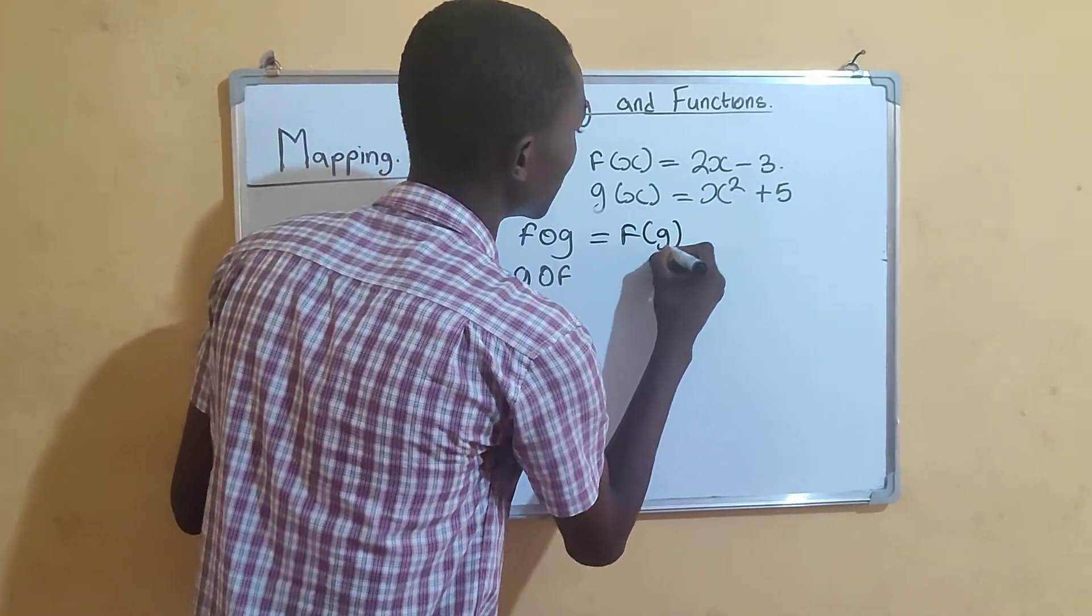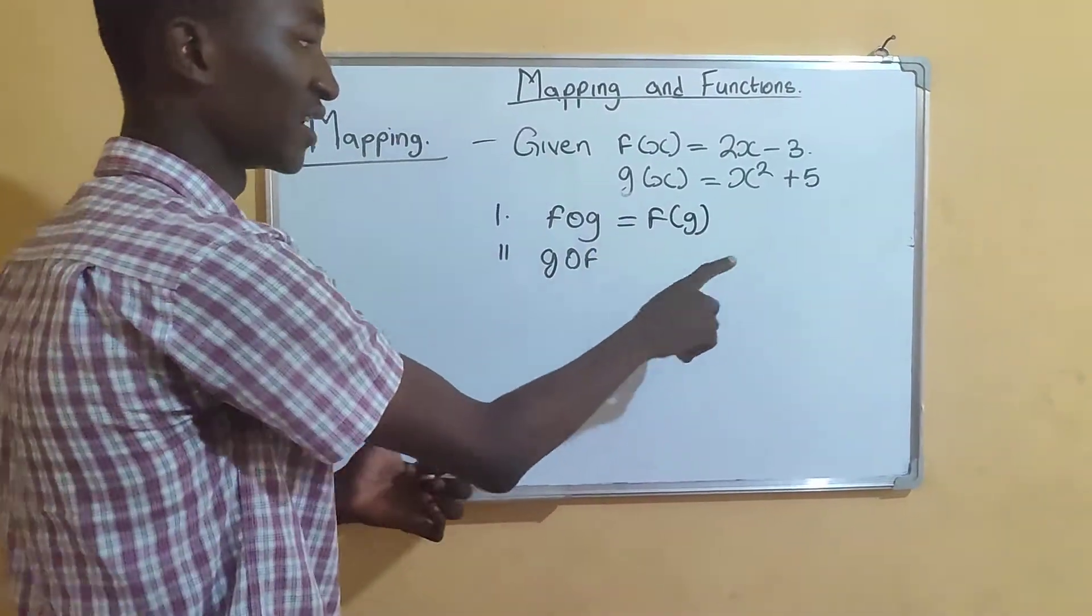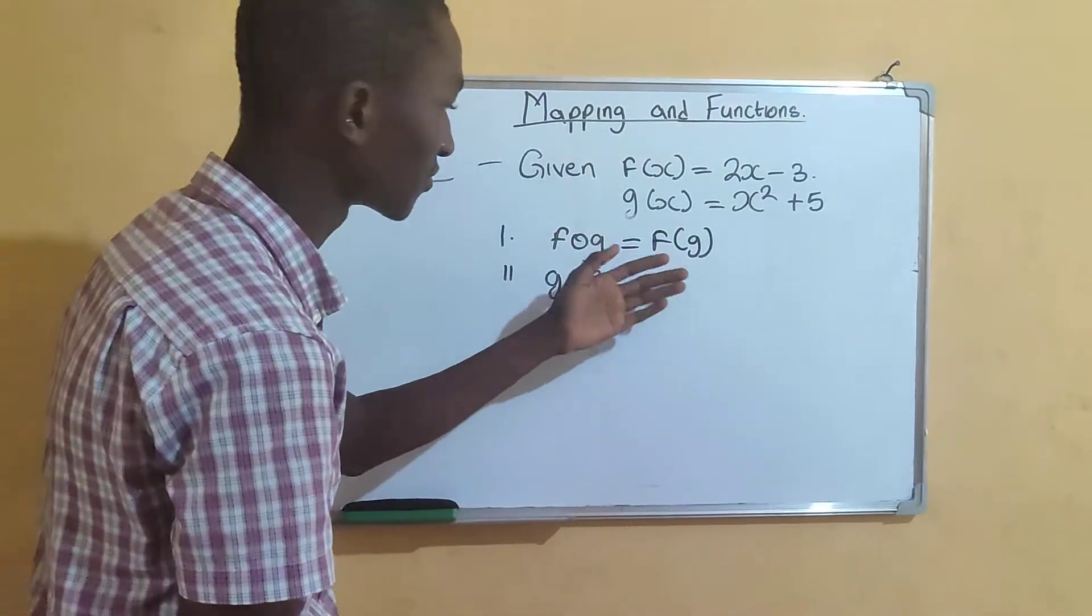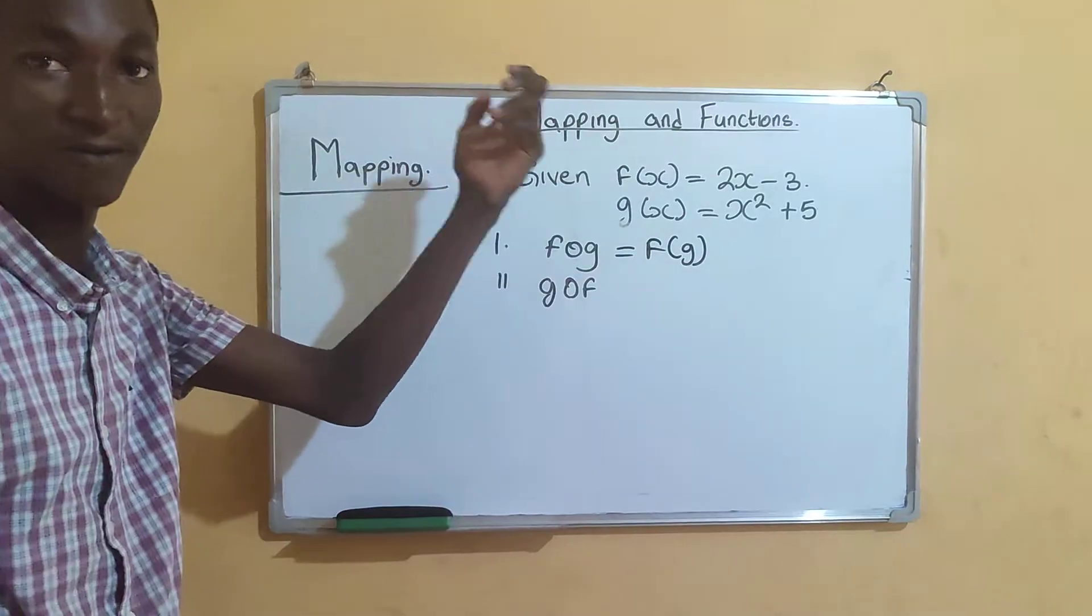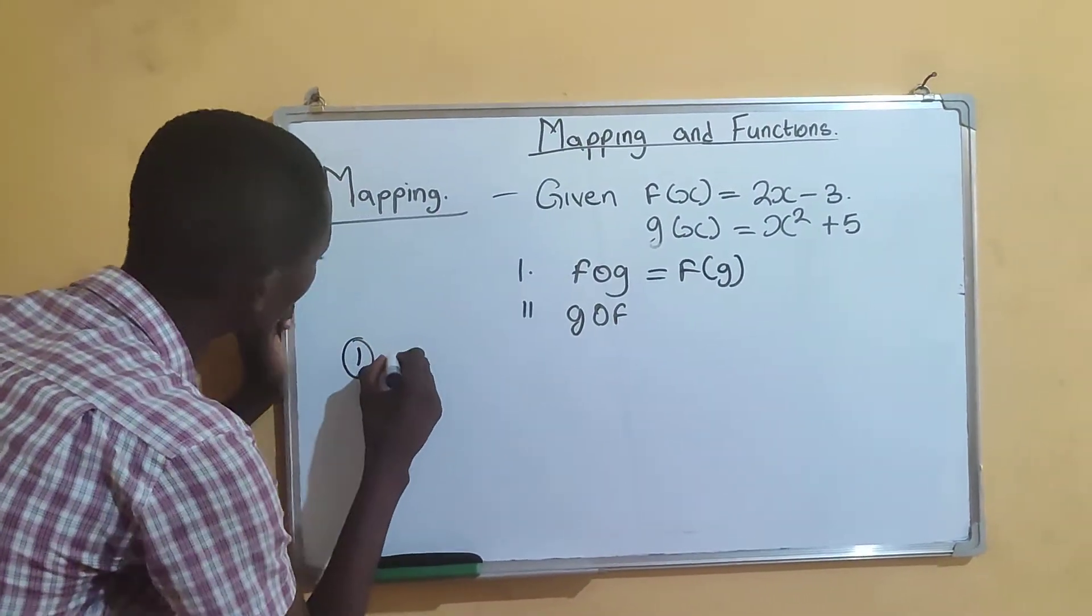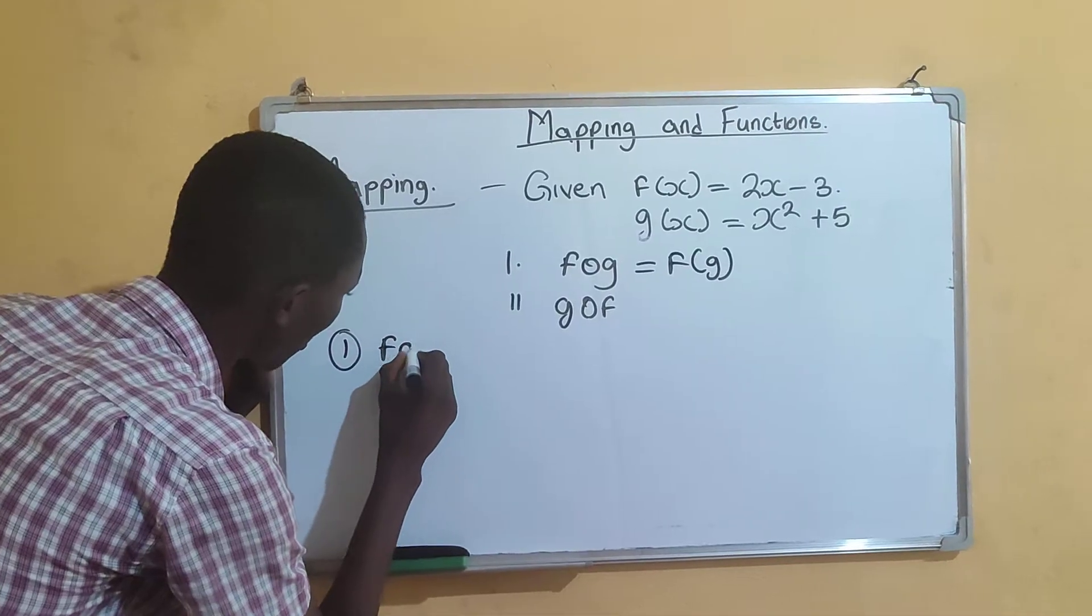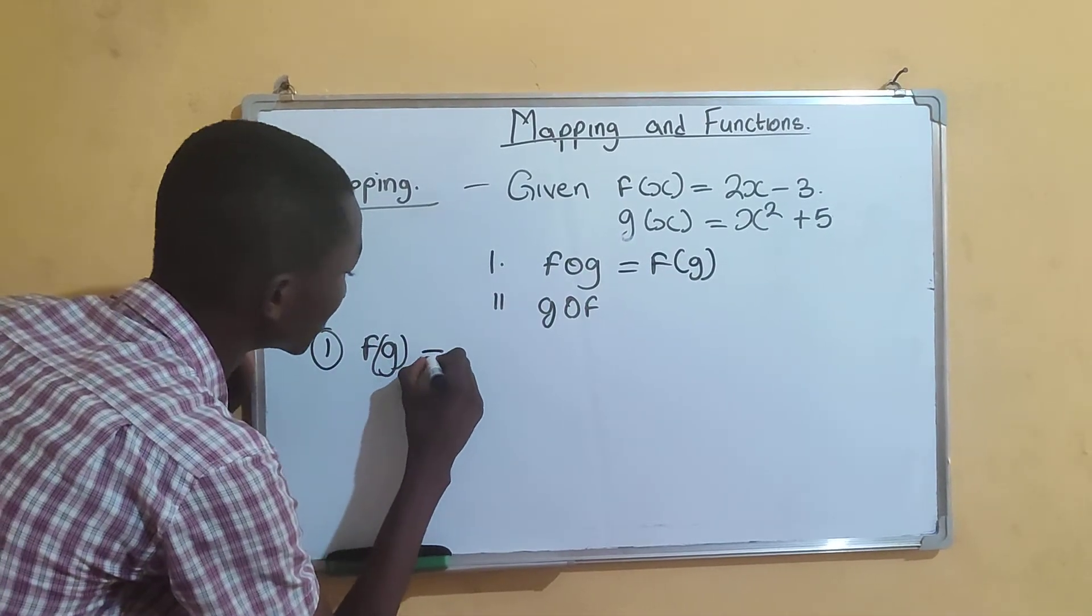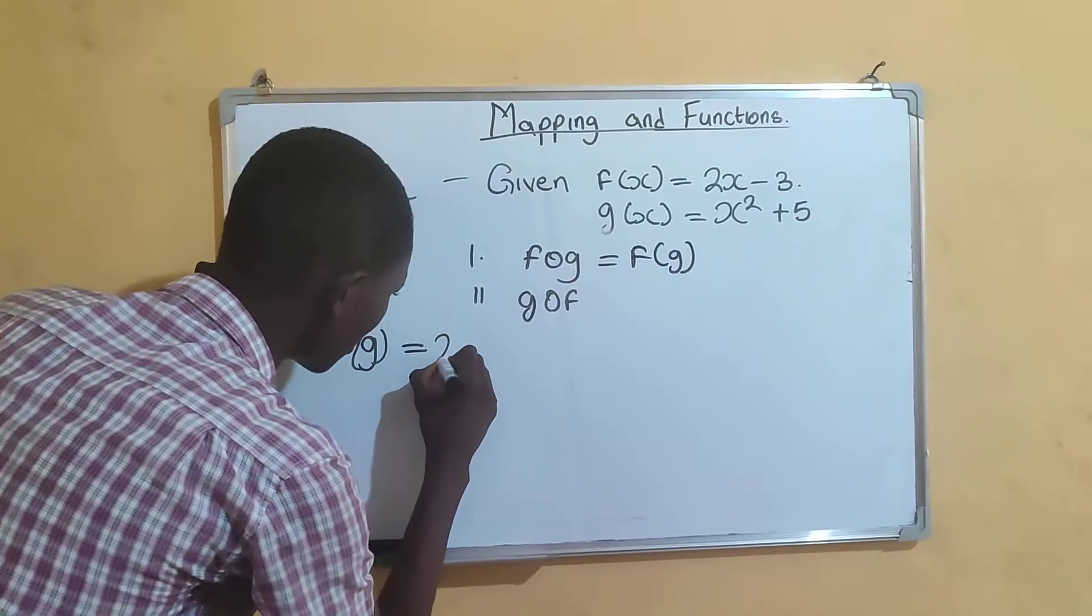But g is not just a letter, g is also a function. That means we are putting the function g in place of x in function f. So for the first question, f of g equals 2 into bracket of - we are replacing x with the whole of function g.